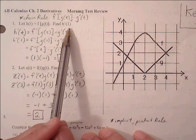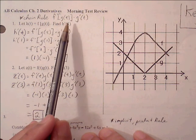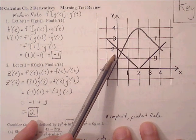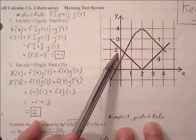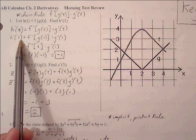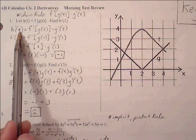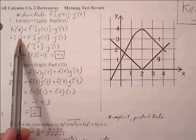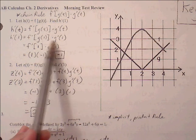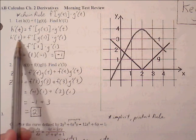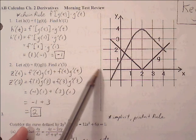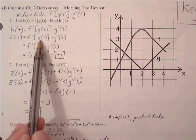Now we can start plugging in one for the t values and see if we can use this diagram, this graph to help us evaluate h prime of one. So we're going to replace all the t with one: h prime of one equals f prime of g of one times g prime of one. Now we're going to see if we can use this graph to help us identify the values. So f prime of g of one — we first need to figure out what g of one is.